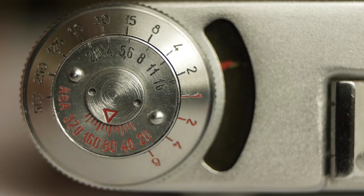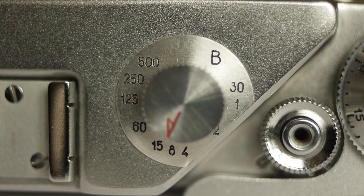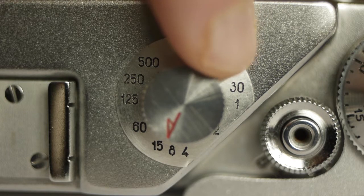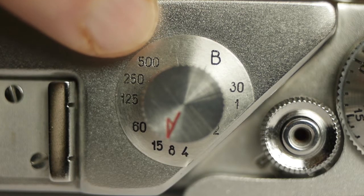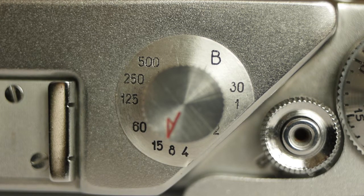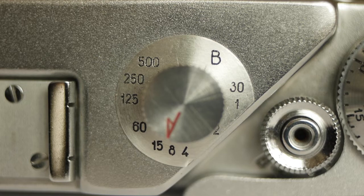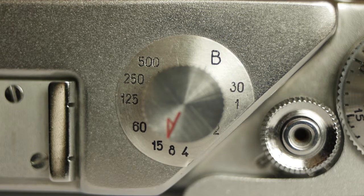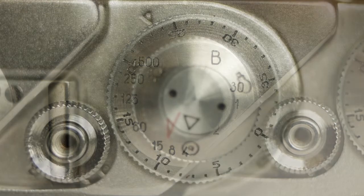The shutter speed dial is marked with engraved markings. We've got one second here just below the 30, and the top speed of 1/500th all the way around here. Two things to be aware of when setting the shutter speed on any Russian rangefinder: never ever change the shutter speed before you've wound on the film—you will damage your camera. Also, never ever turn the shutter speed selector between 30 and 1—again, you will damage your camera.